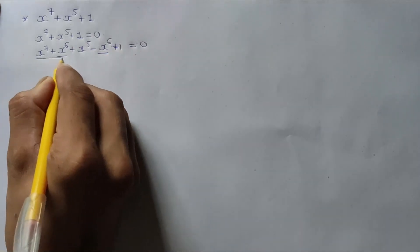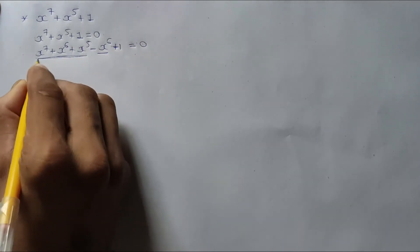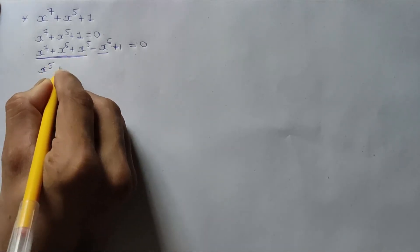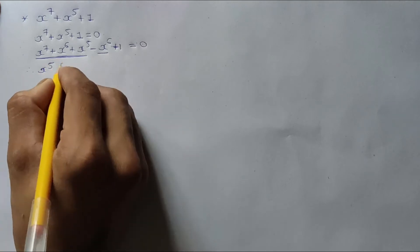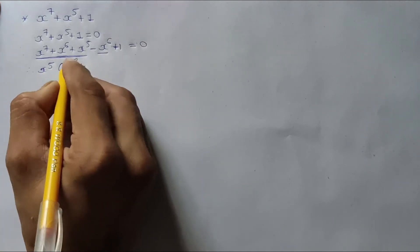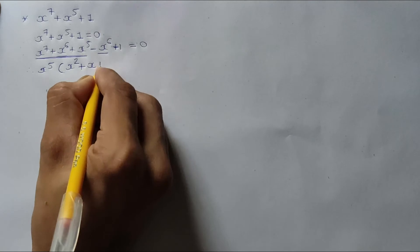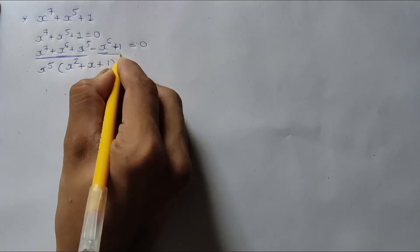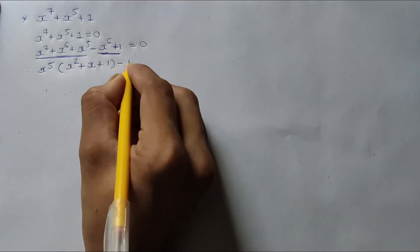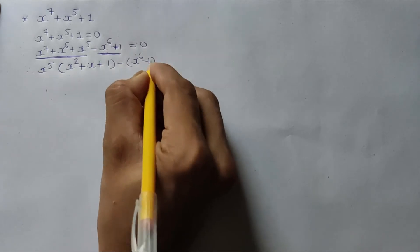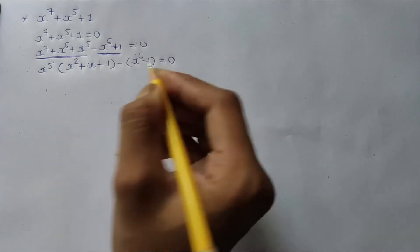Now from these 3 terms, take x raise to 5 common. Therefore x raise to 5 in bracket x square plus x plus 1, then take minus 1 common from the remaining 2 terms, so minus x raise to 6 minus 1, equal to 0.